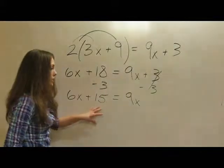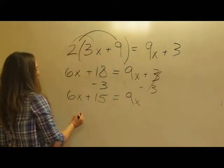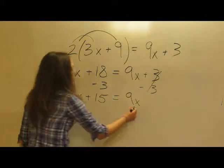Okay, so now we have 6x plus 15 equals 9x. Now, because we have an x over here and an x over there, let's combine those.